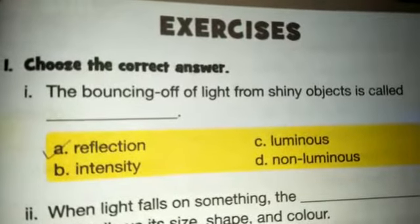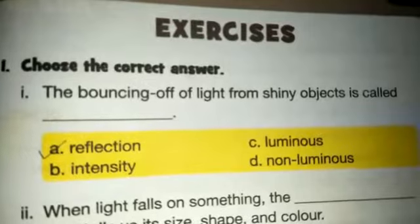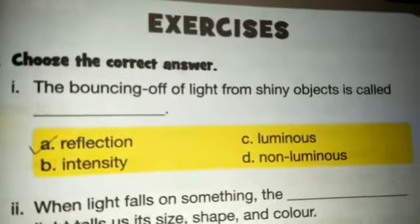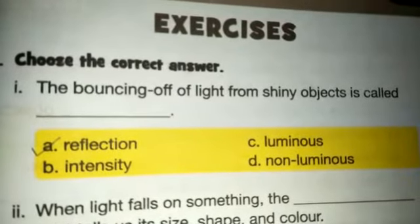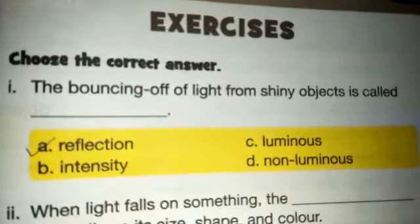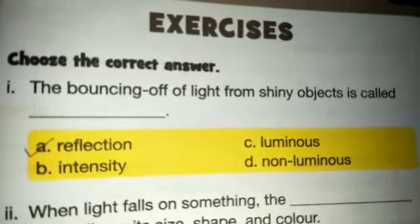Assalamualaikum students, hope you are all fine. Today we will solve the exercise. Open your book page number 95. Choose the correct answer. First: the bouncing off of light from shiny objects is called — options are: A) reflection, B) intensity.